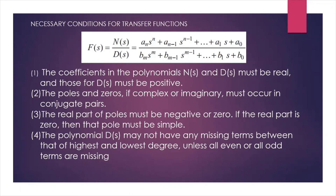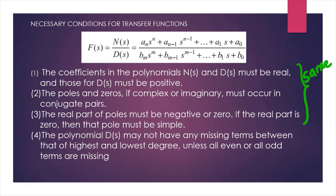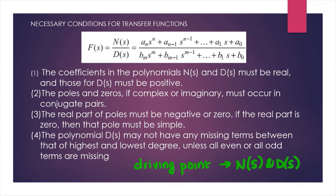Now let's see the necessary conditions for a function f(s) to be a transfer function. The first three conditions are exactly the same as those for a driving point function. However, the fourth condition — for the transfer function — only the denominator has to satisfy it, whereas for driving point functions it must be satisfied by both the numerator and the denominator.